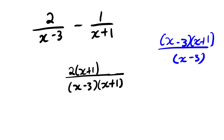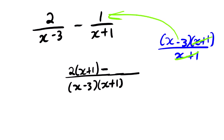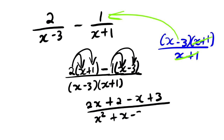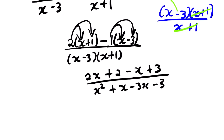Since we have a negative between the two fractions, this negative brings it down. We do the same process with the second fraction, which has denominator x + 1. This gets rid of that term and we are left with x - 3, multiplied by 1. Simplifying further by distributing, we get 2x + 2 minus x + 3. Simplifying the denominator gives us x squared plus x minus 3. So the result is (x + 5) all over (x² - 2x - 3).